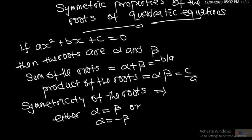Today we want to discuss symmetric properties of the roots of quadratic equations. In the previous lesson we looked at the sum and the product of the roots of a quadratic equation. If the general form is ax² + bx + c = 0, with roots alpha and beta, then the sum of the roots is alpha plus beta = -b/a, and the product is alpha·beta = c/a.